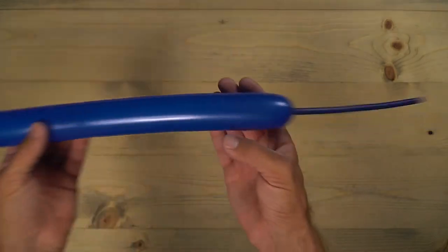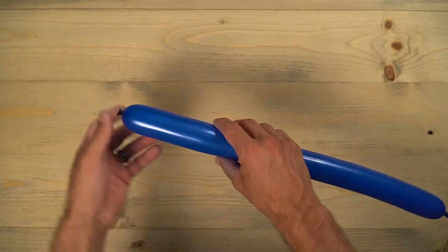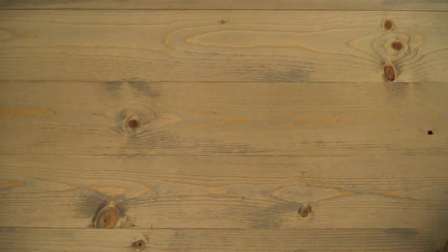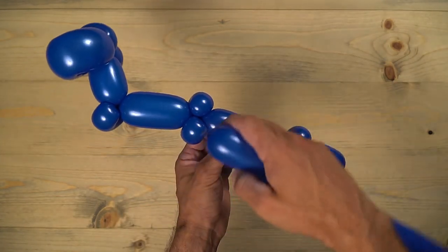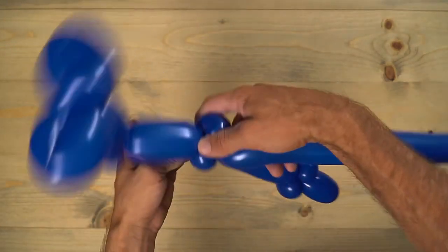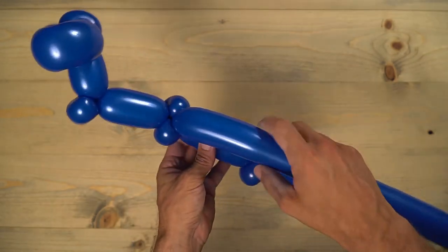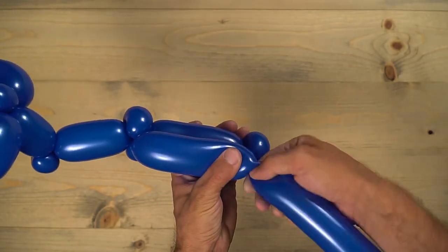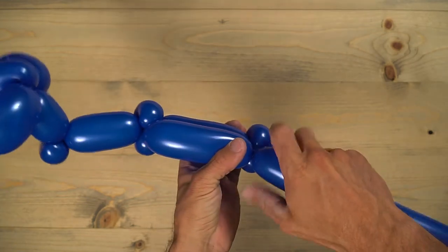We'll grab that second one here. This is going to add more to the main body. So we're going to put the nozzle in right there between those two pinch twists. Wrap it around. And then bring it across so we get the same size bubbles right next to each other. Go ahead and twist that in.